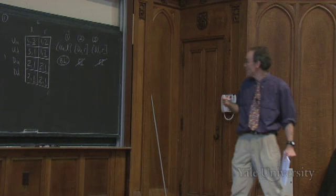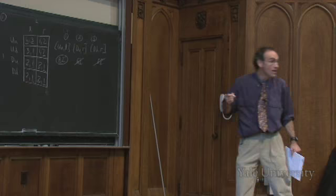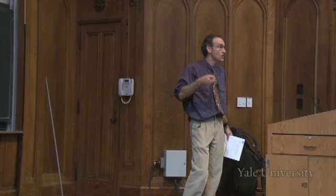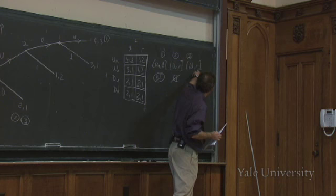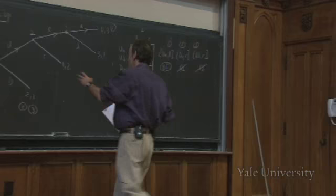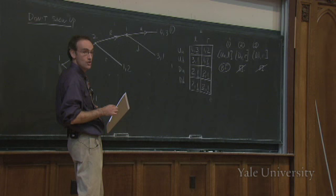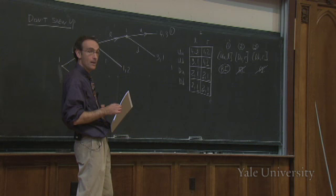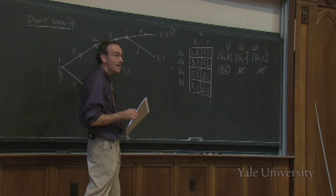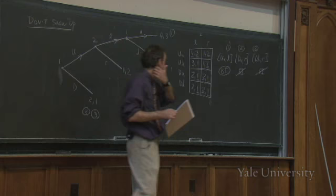Why are they equilibria even though they fail backward induction? If player one thinks player two is going to screw up and choose right, player one doesn't want to travel up the tree because she'll be carried down to a payoff of one. Instead she chooses the safe option and gets two. And from player two's point of view, if player one is exiting the game, it doesn't matter what player two says she's going to do — she doesn't get to move anyway.